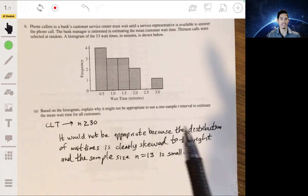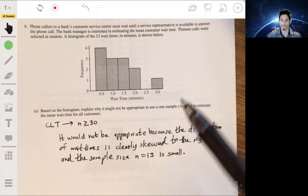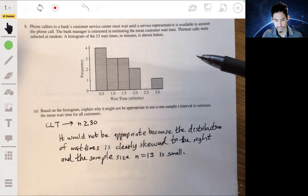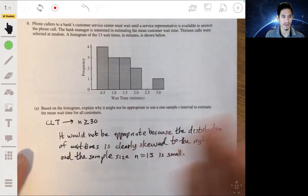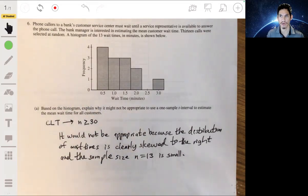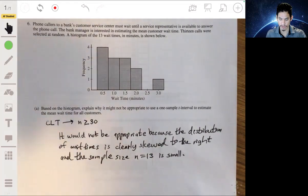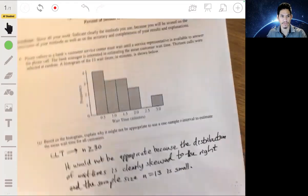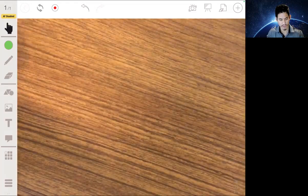Now, a piece of advice when you're writing your answers to free response questions: try to be efficient, try not to drag on with a lot of dribble. Just get straight to the point. Saying less is sometimes better. Be concise and simple and direct to the point.